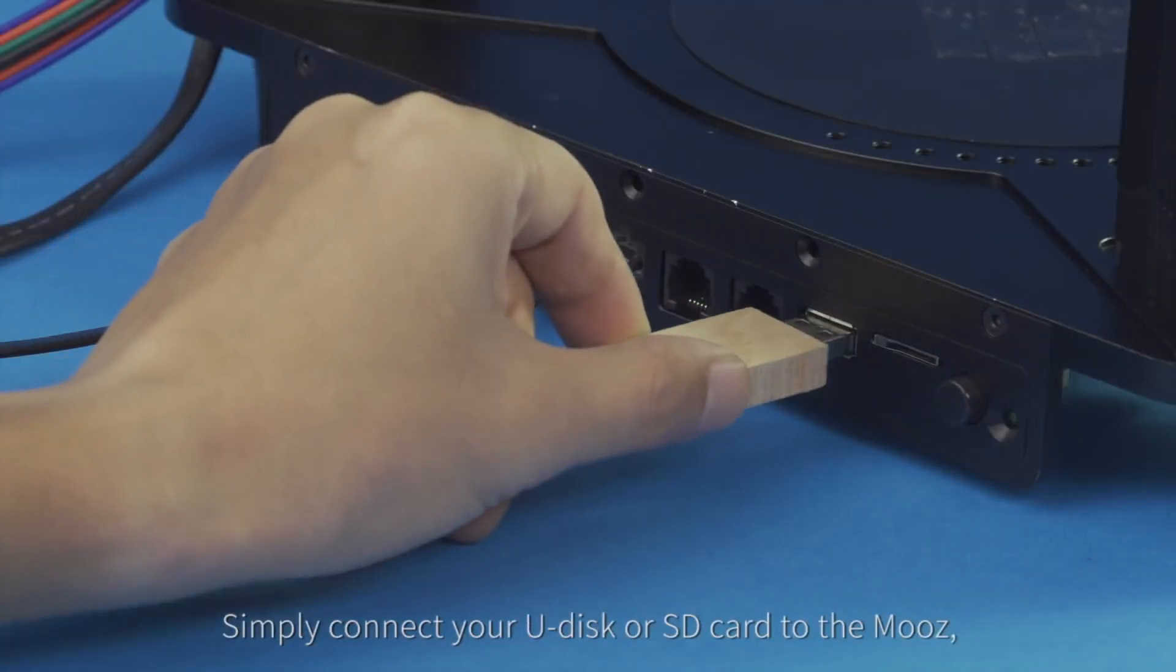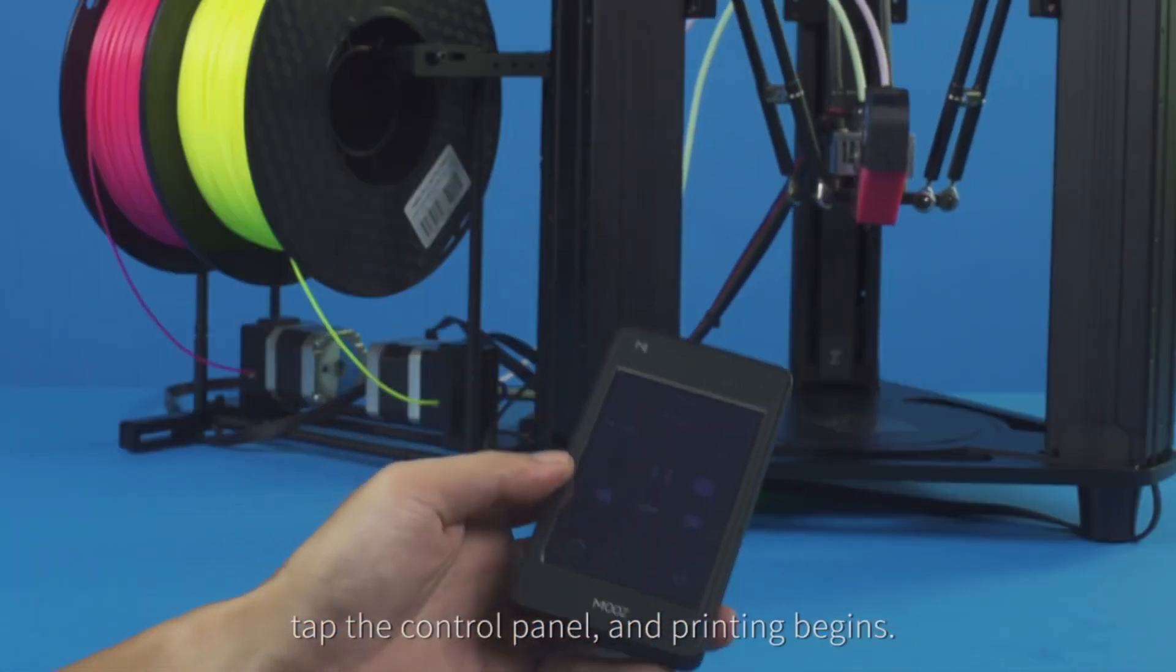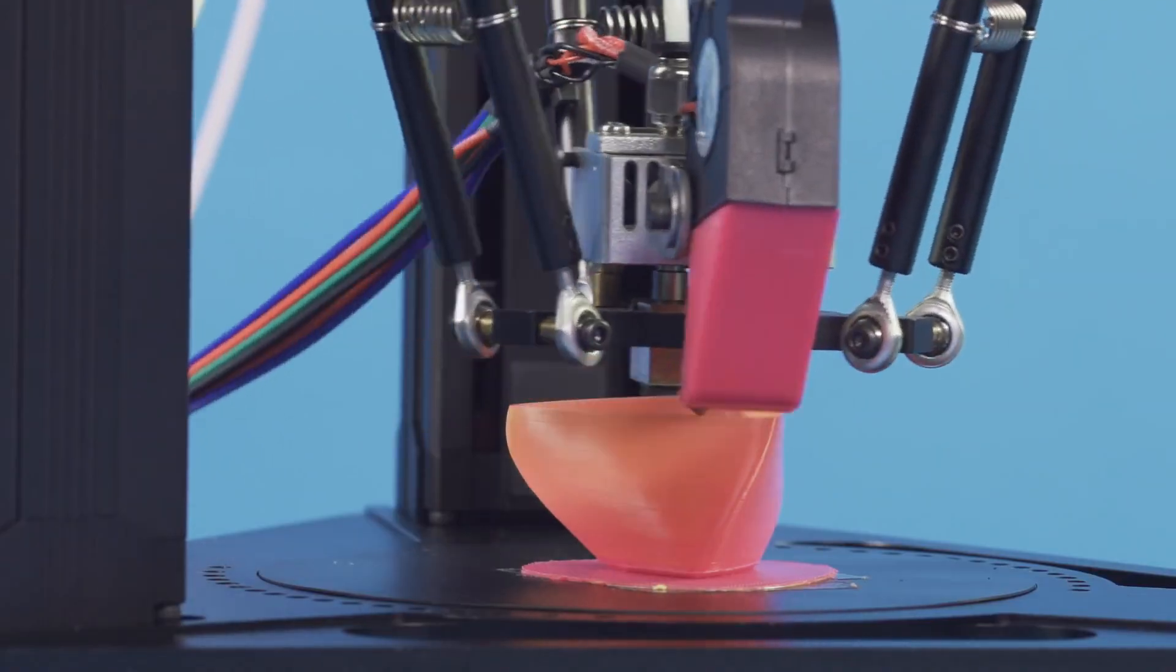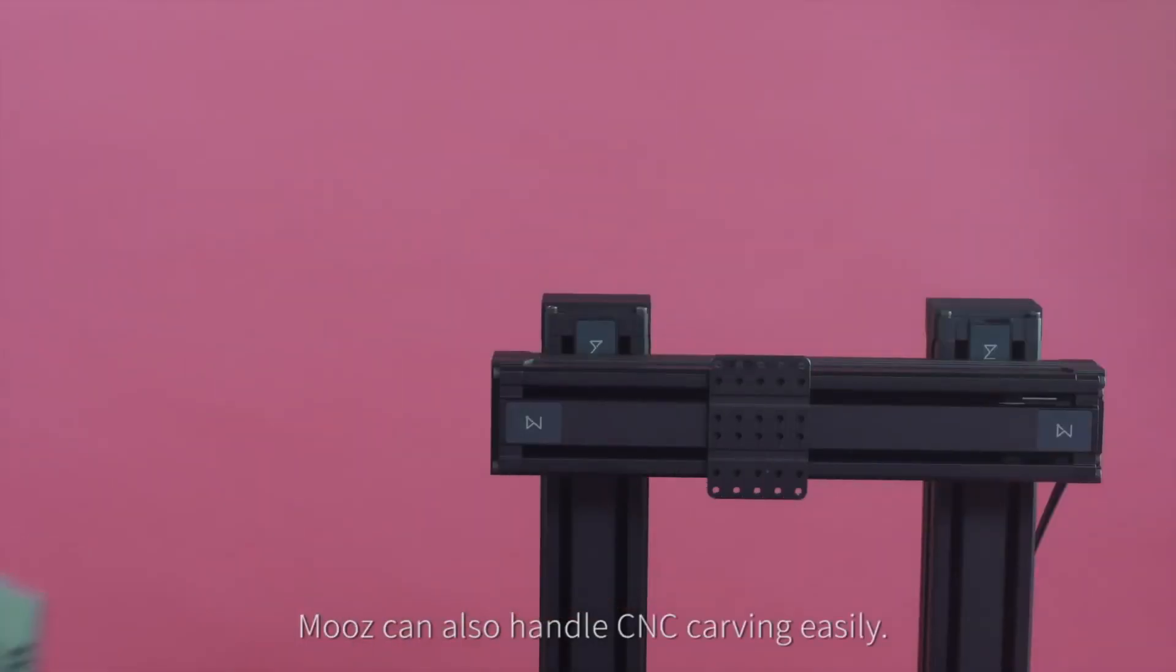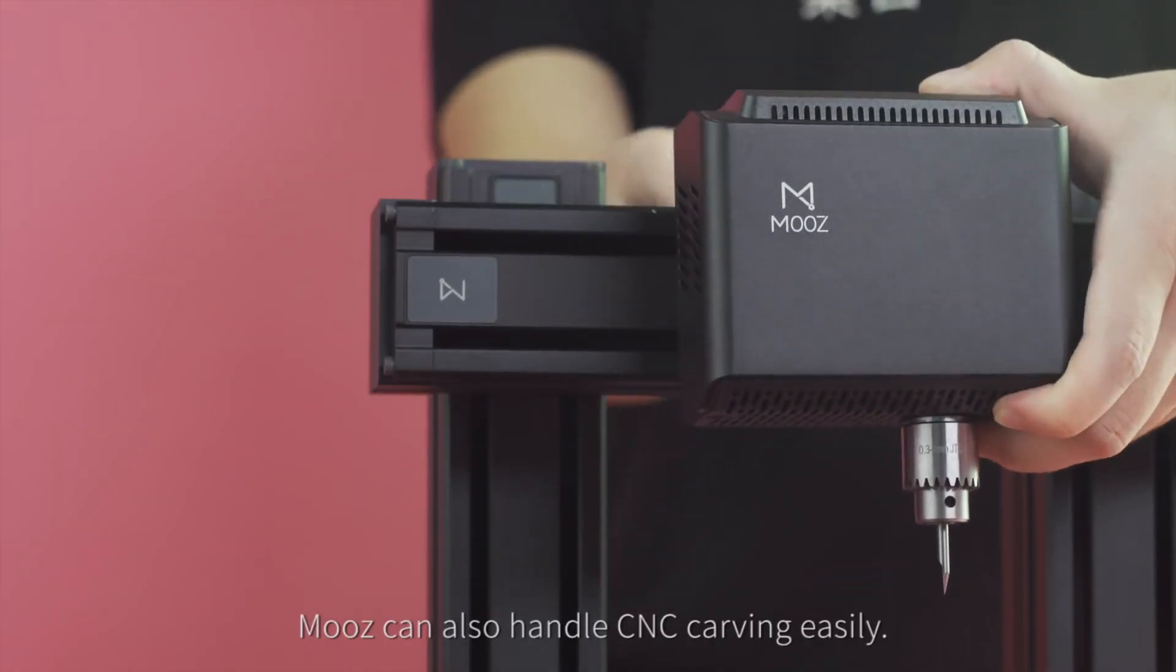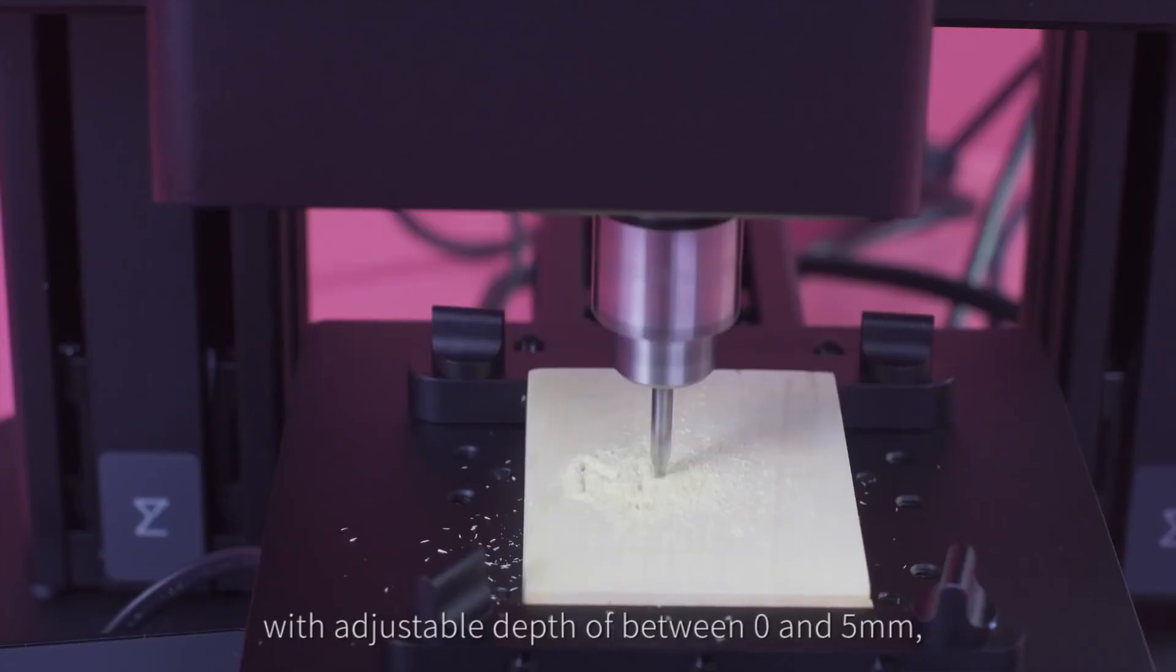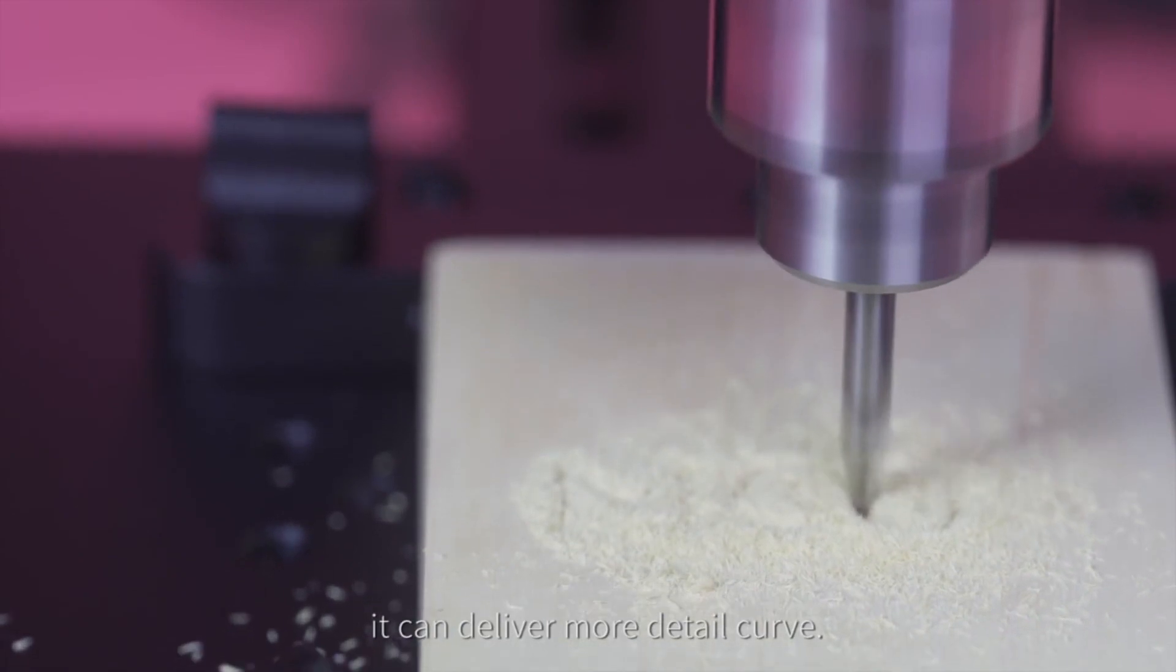Simply connect your USB disc or SD card to the Moose, tap the control panel and printing begins. Moose is super easy to use. Moose can also handle CNC carving easily with adjustable depth of between zero and five millimeters. It can deliver more detail curve.